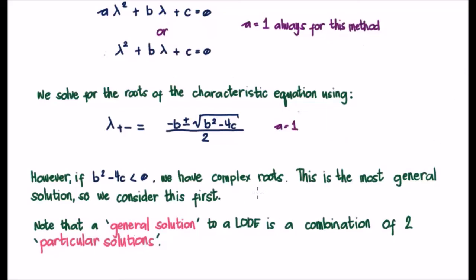But there is a bit of a subtlety. In order to get a solution to our differential equation, we have to have what are known as two particular solutions. And when you gather two particular solutions in what's known as a linear combination, you have a general solution.